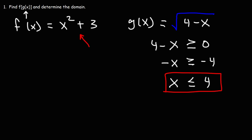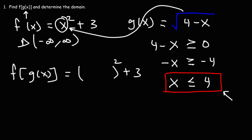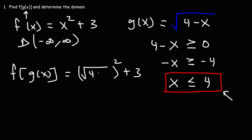This is the restriction for g of x. Notice that f is a polynomial function — it has no restrictions; its domain is all real numbers, negative infinity to infinity. So when we combine f and g, this will be the only restriction. f of g of x becomes (square root of 4 minus x) squared plus 3. The square and square root cancel, leaving 4 minus x plus 3, which simplifies to 7 minus x.